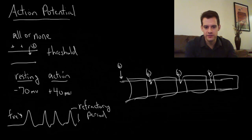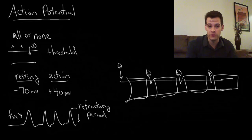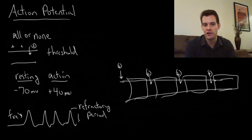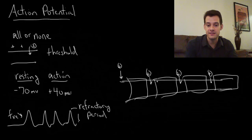Instead, we can skip to the next gap — the next node of Ranvier. We're only moving ions in a few places on the axon rather than all the way across the entire axon, which means we can send the message more quickly.